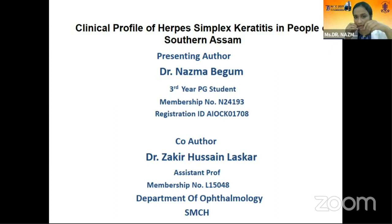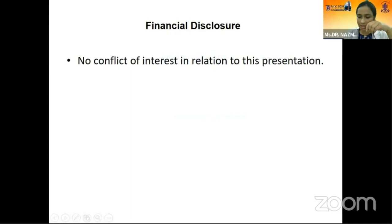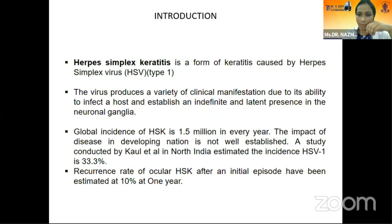Herpes simplex keratitis is a form of keratitis caused by herpes simplex virus type one. The virus produces a variety of clinical manifestations due to its ability to infect a host and establish an indefinite latent presence in the neuronal ganglia.